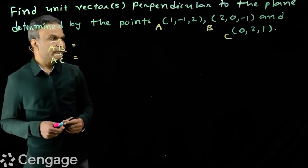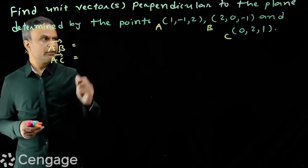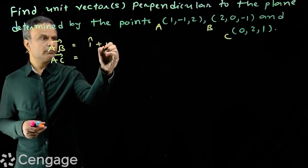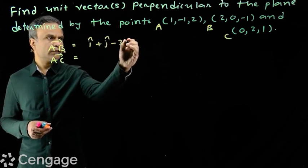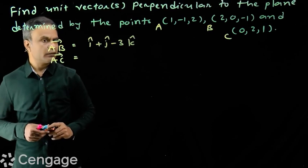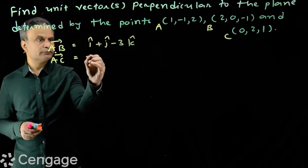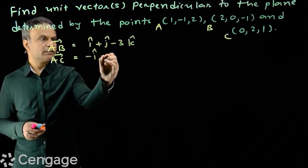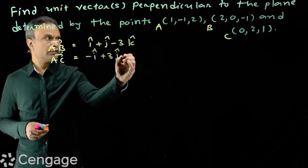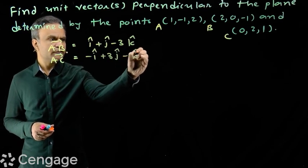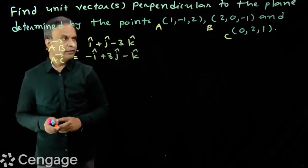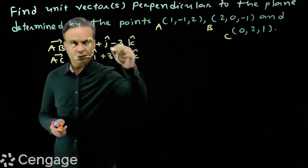What will be vector AB? Vector AB will be i + j - 3k, and vector AC will be -i + 3j - k. The plane is determined by either the three points or by these two vectors.